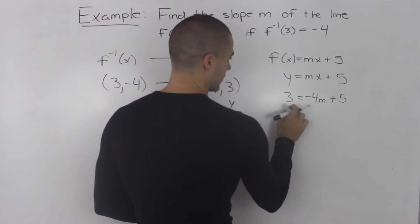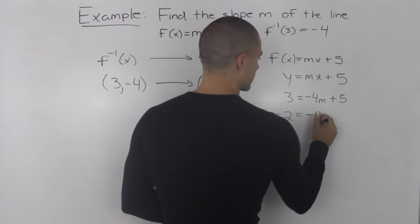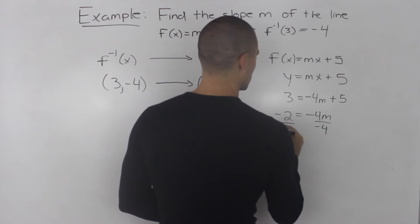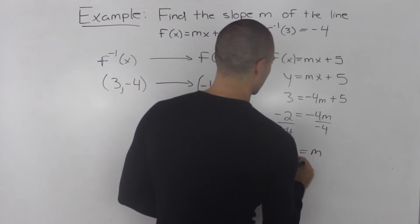Bring the 5 over, so we have 3 - 5 which is -2 equals -4m. Divide both sides by -4. So m equals 1/2.